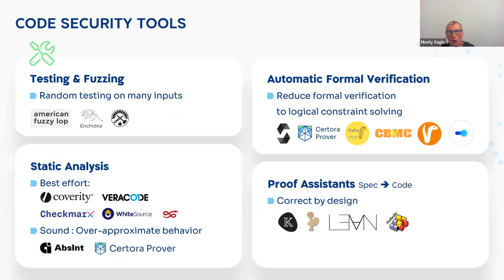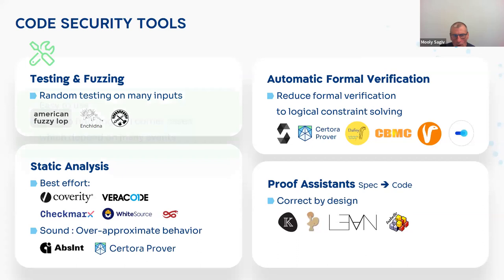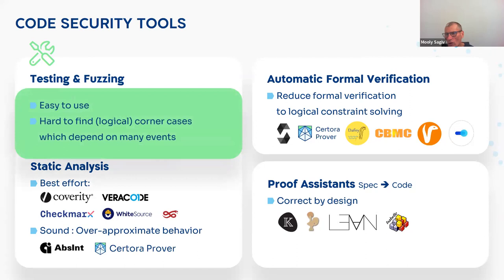Certora is not the only tool. There are different technologies to prevent or find bugs before code is deployed. The first technology you can use is testing, or even automatic testing called fuzzing, where you try the tool on many many inputs. In the area of general code there is AFL — American Fuzzy Loop — and for smart contracts there is Echidna by Trail of Bits and Foundry by Paradigm and community. These fuzzing tools do testing before the code is deployed. It's easy to use, but the problem is coverage: if you have a very hard-to-find logical bug, it's harder to find with this technique.